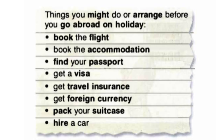Now let's read the gold box. Things you might do or arrange before you go abroad on holidays: book the flight, book the accommodation, find your passport, get a visa, get travel insurance, get foreign currency, pack your suitcase, hire a car.